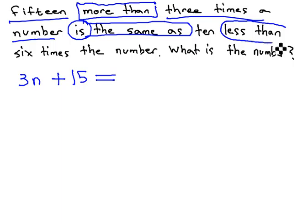10 less than. To get less than something, we need to be subtracting. We remember that subtraction is built backwards, so when we want 10 less than, we're subtracting 10 from something.